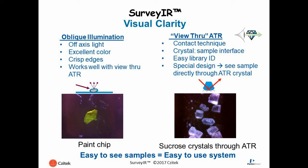A unique feature of Surveyor is the ability to observe specimens through the diamond internal reflection element and also observe contact with the sample. Attenuated total reflection spectroscopy is a contact method which provides ease of use and simplicity in the measurement. Samples can be identified through searching of library spectra, as with other infrared spectroscopic methods.